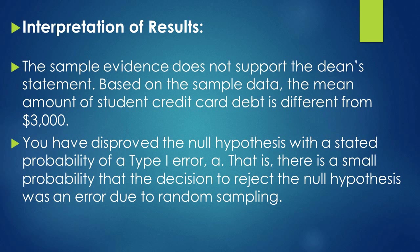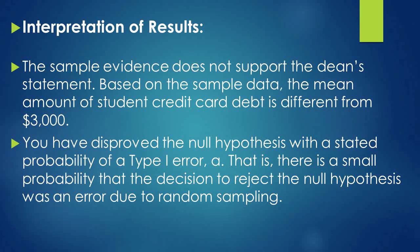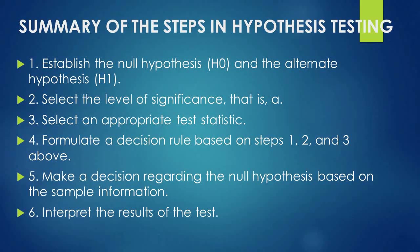This is also related to Type 1 error — there is a small probability that the decision to reject the null hypothesis is itself an error. Here our sampling error is equal to 5% because we took a level of significance of 5%.